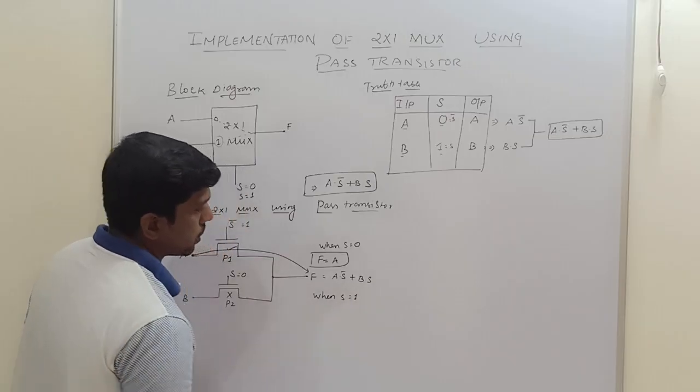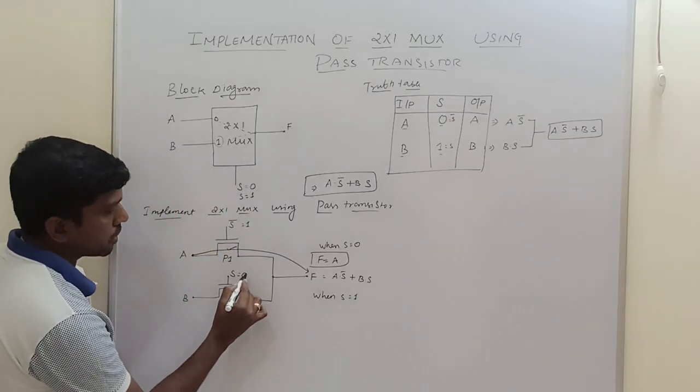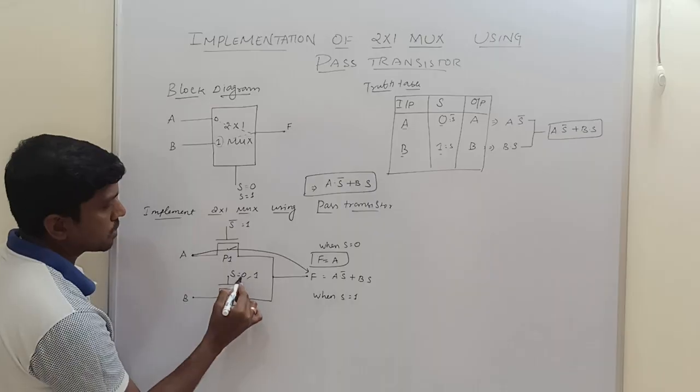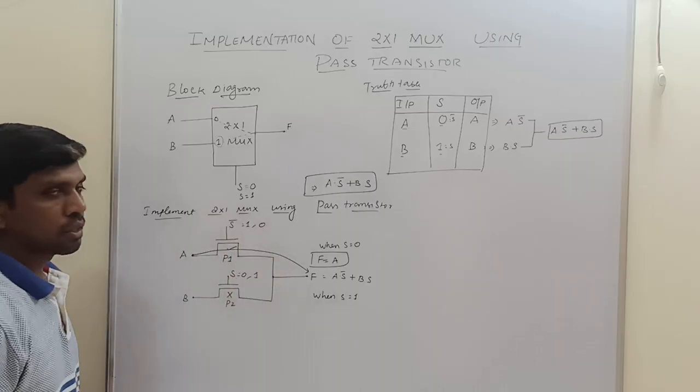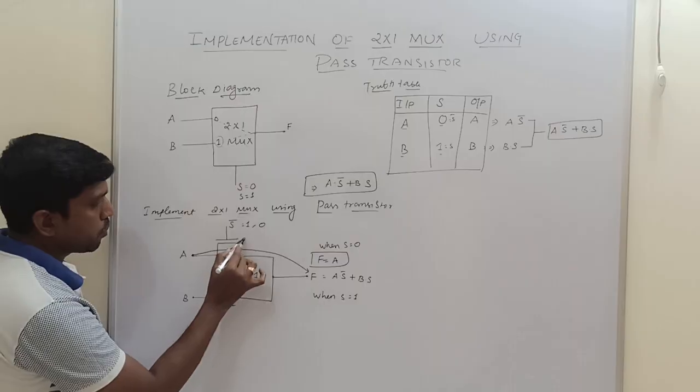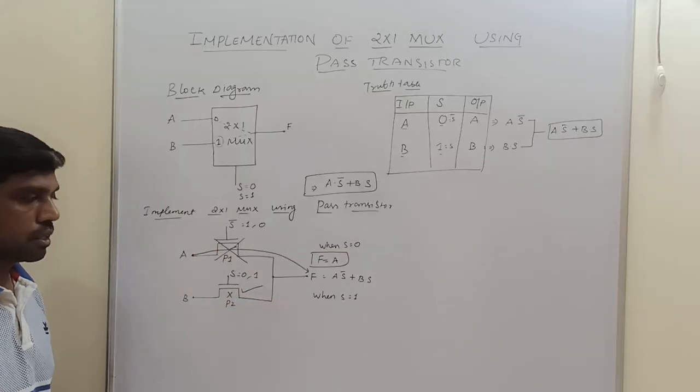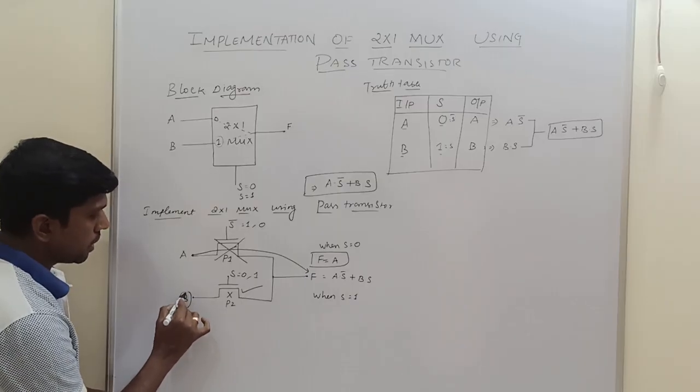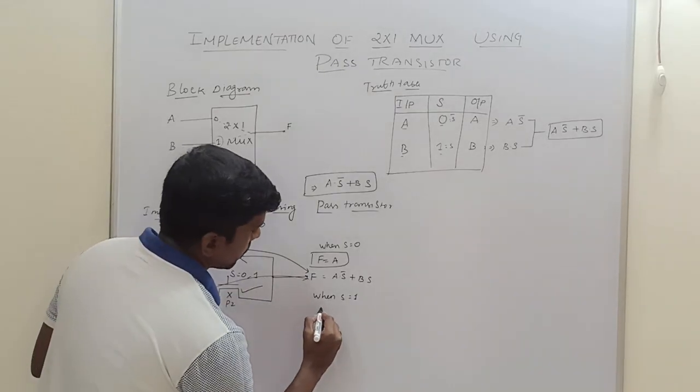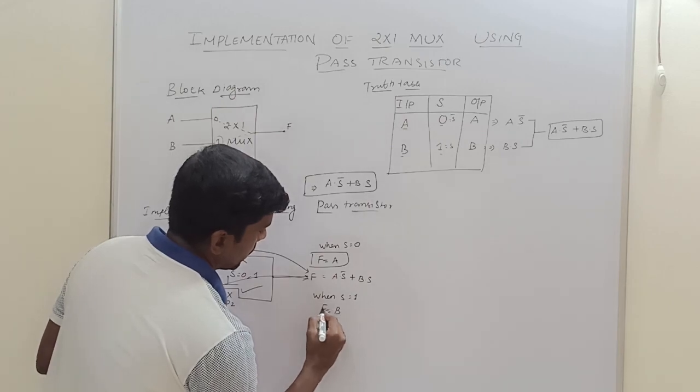Then the second case: when S equals 1. So now I substitute the selection line value as 1. S equals 1, so S̄ is 0. So 0 means P1 transistor turns off, P2 transistor turns on. So this B is copied to the output. Now F equals B.